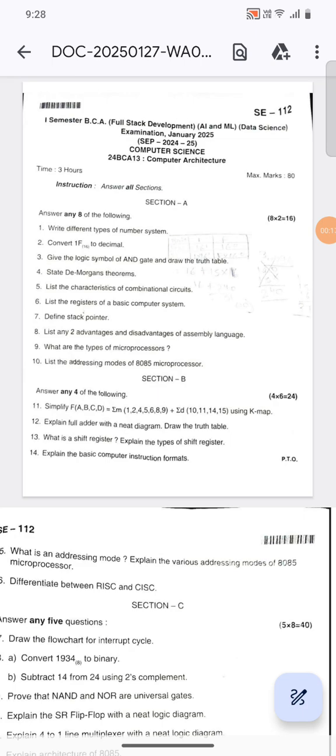There is Section A, Section B, and Section C. Section A is for two marks - you need to answer any eight of the following. Section B is for six marks - you need to answer any four of the following. And Section C is for eight marks - you need to answer any five of the following.